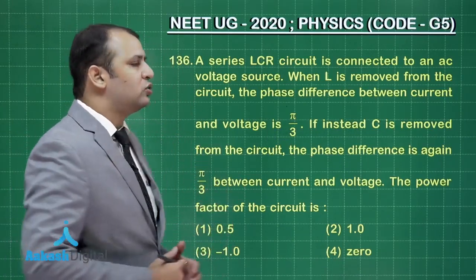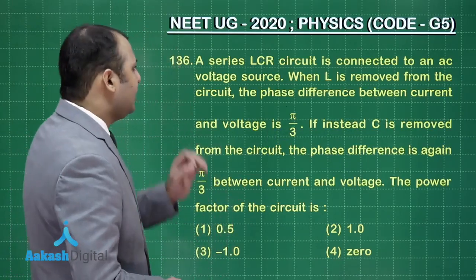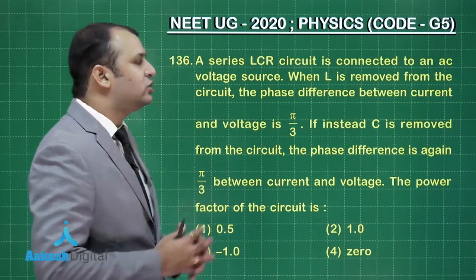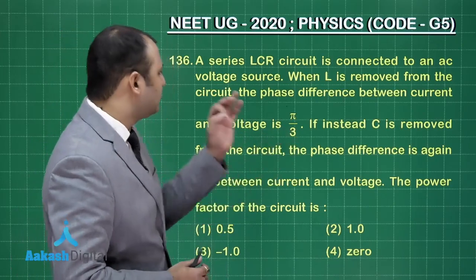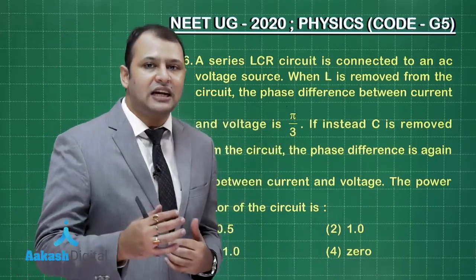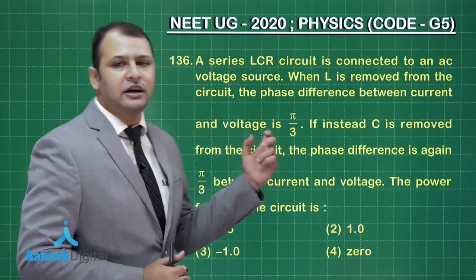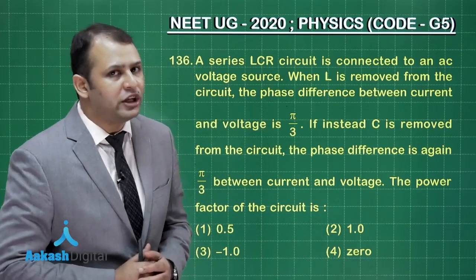Now this question belongs to chapter alternating current. Here as per the question, a series LCR circuit is connected to an AC voltage source. When L is removed from the circuit, that means it becomes the CR circuit, right? Then the phase difference between the current and voltage is pi by 3. That means current is leading the voltage by pi by 3.